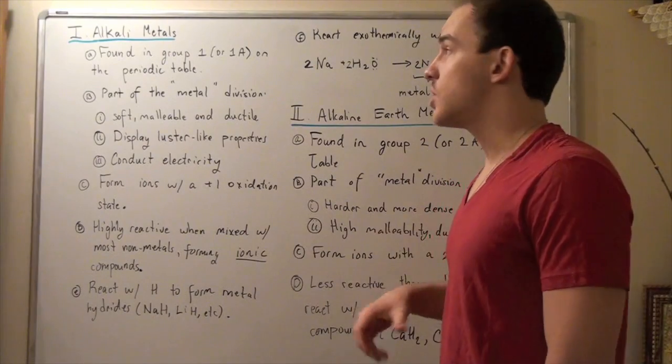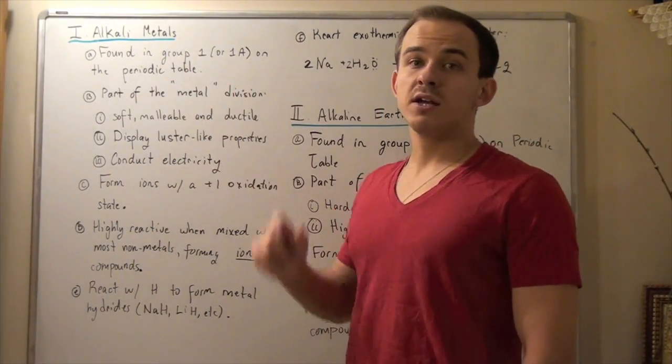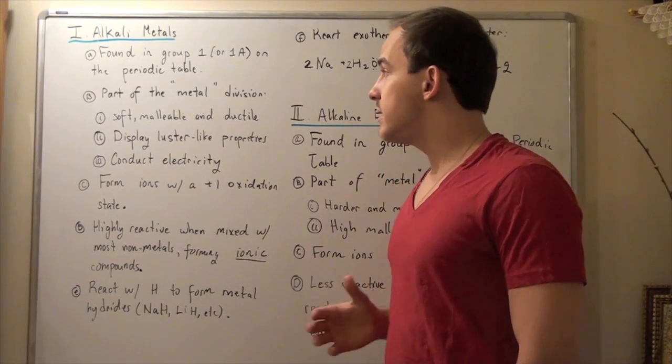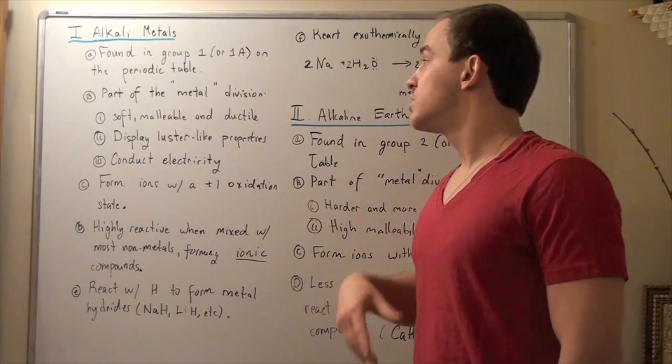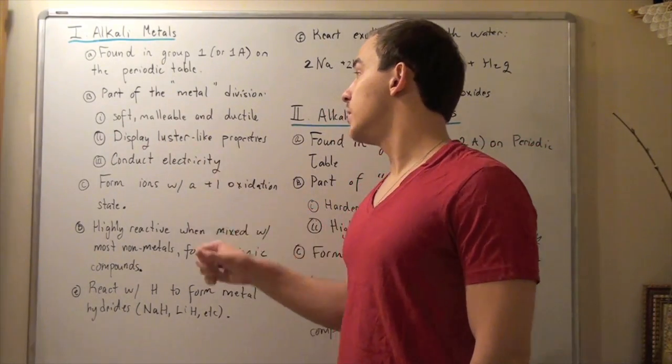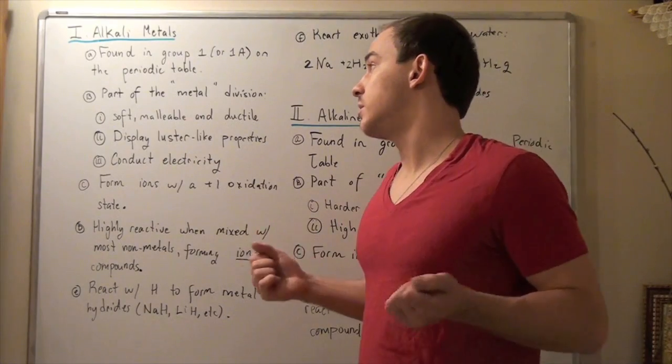The alkali metals are found in group 1 or group 1A on our periodic table. That means these guys are metals or part of that metal division, which implies that they're soft, malleable, and ductile. Ductile simply means they're stretchy or stretchable.